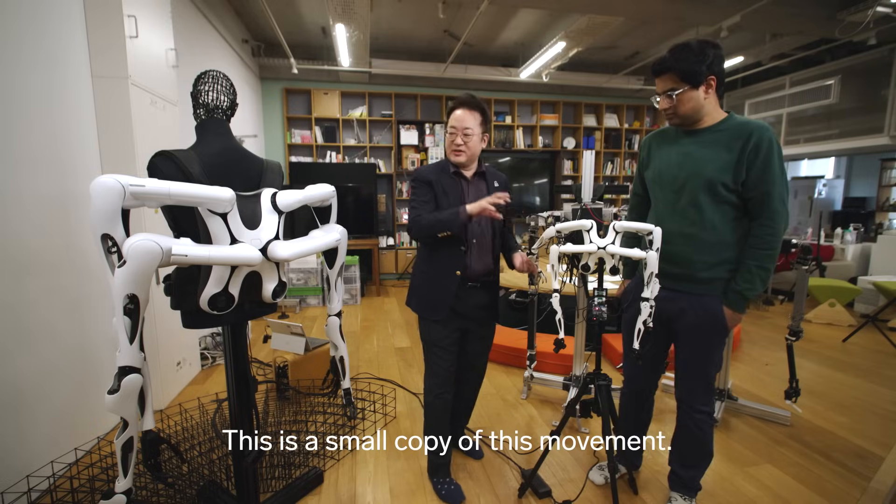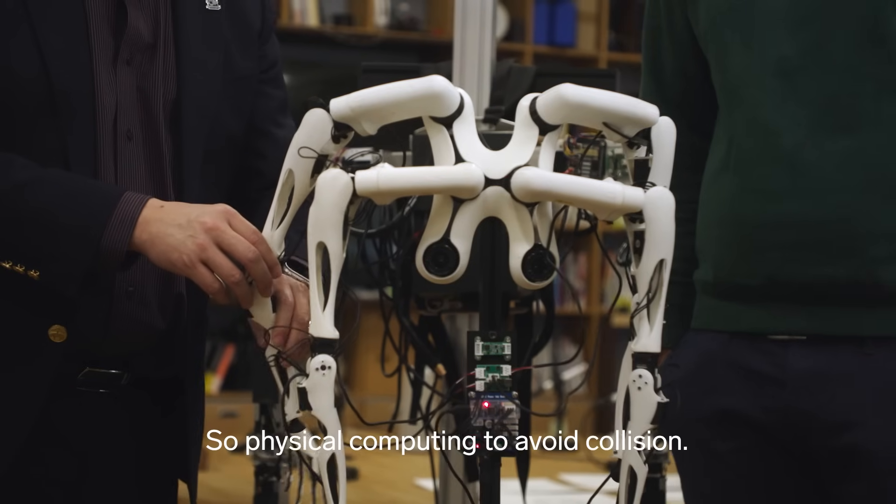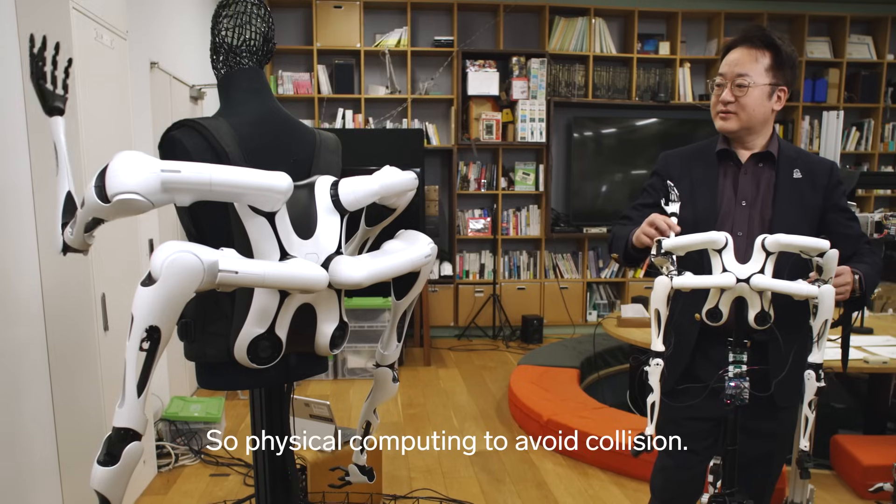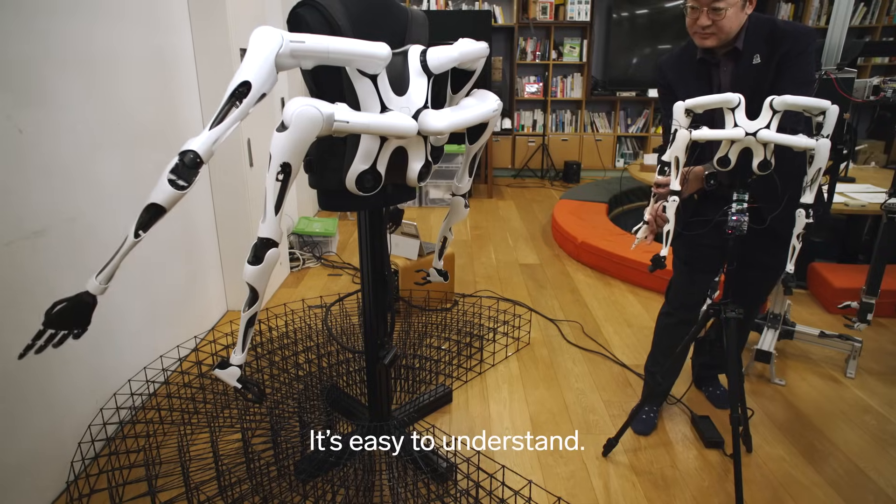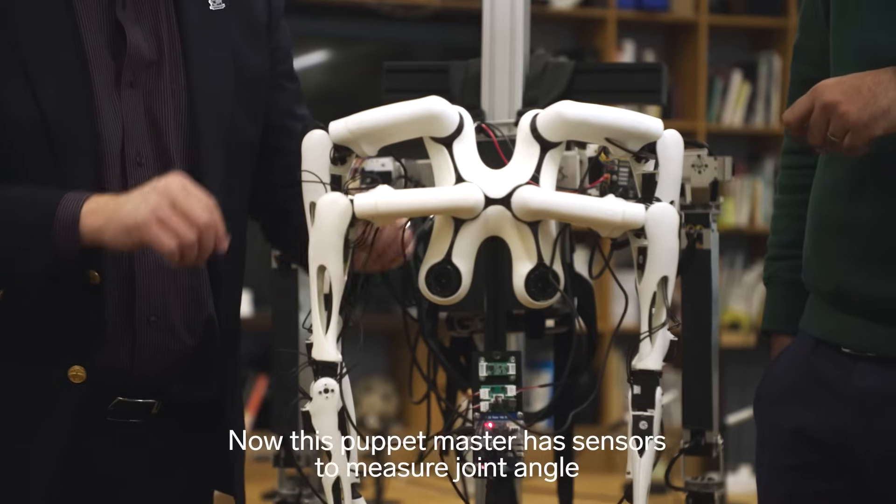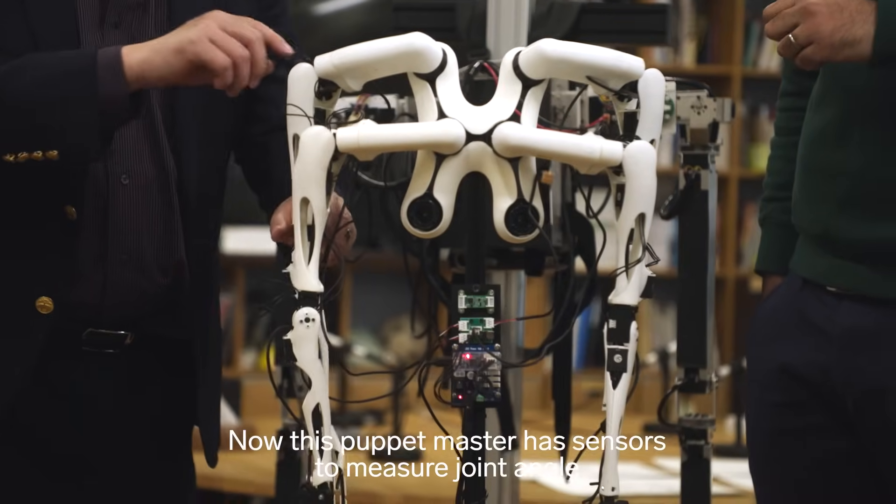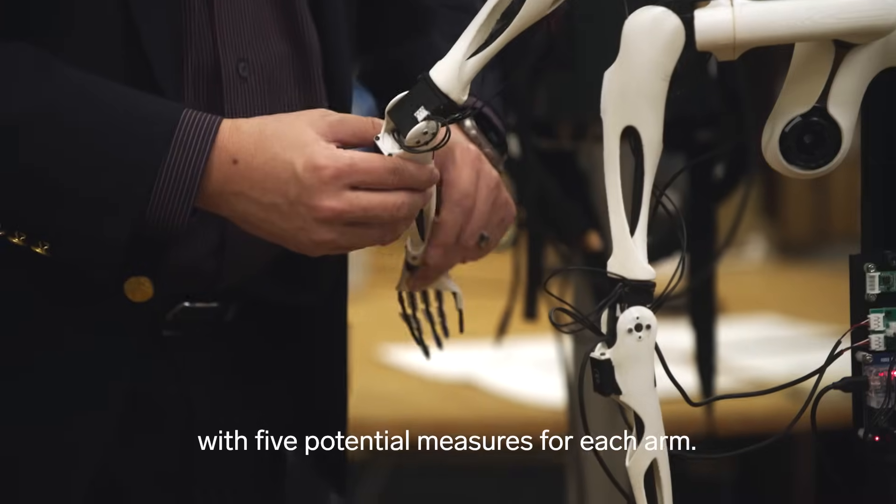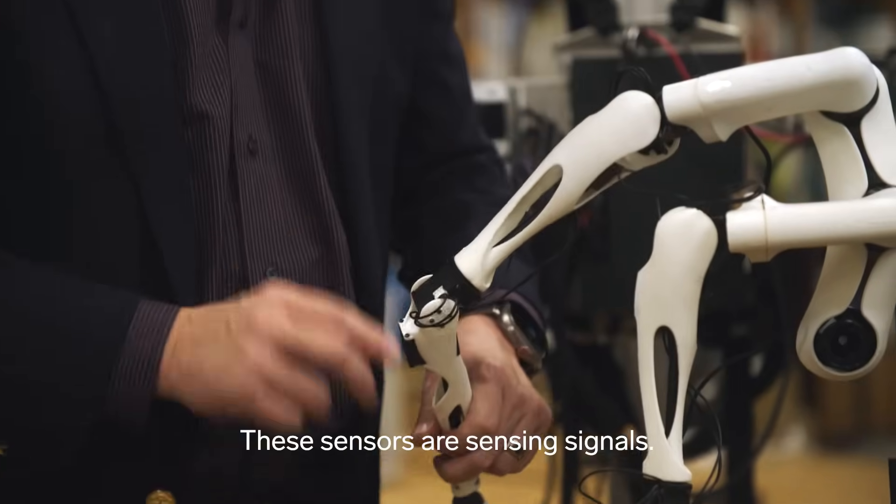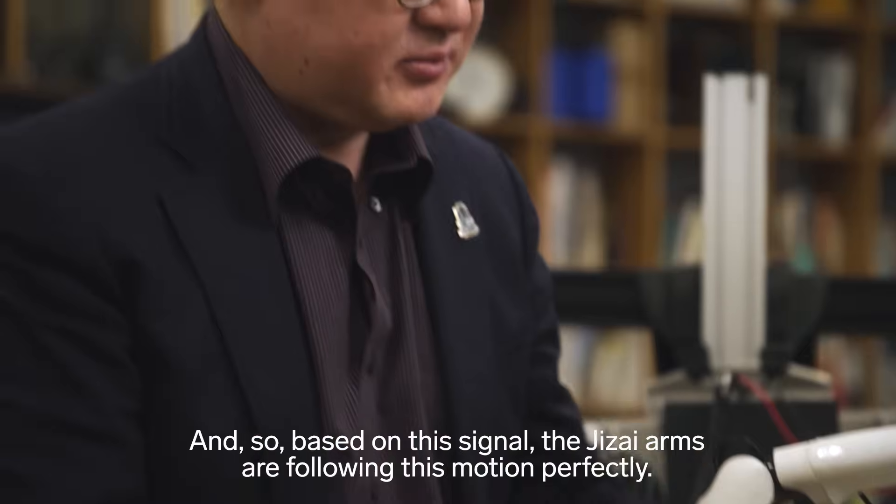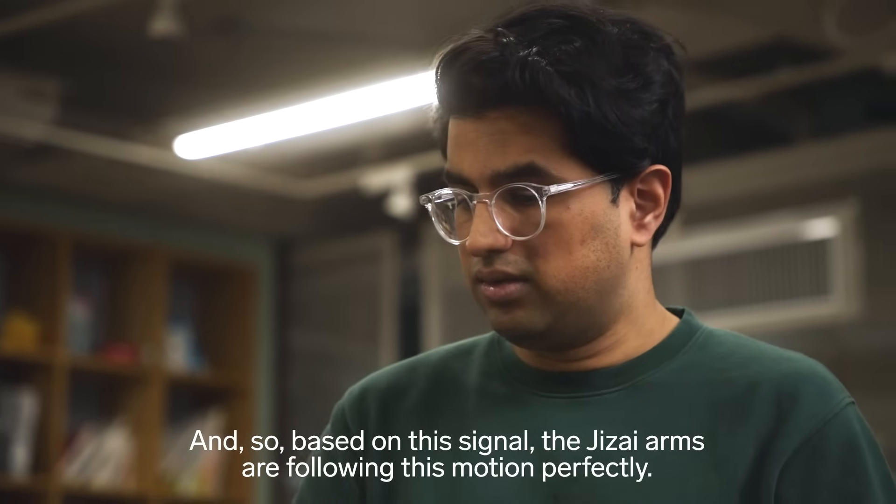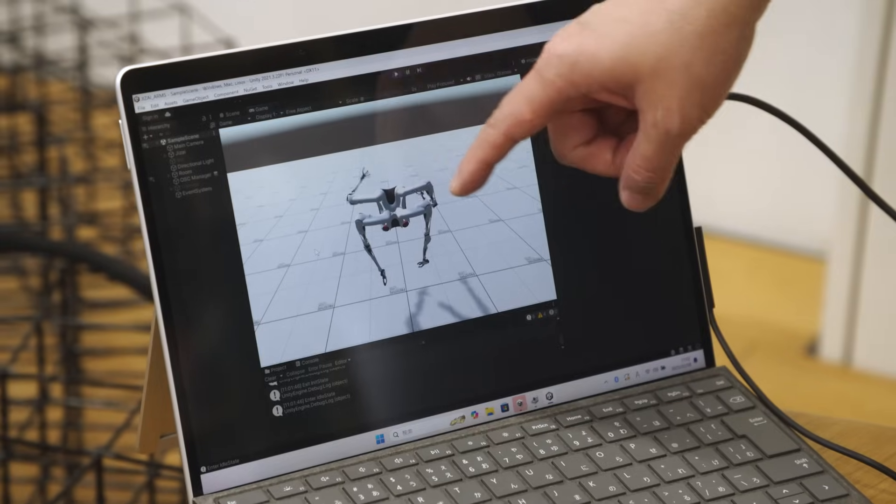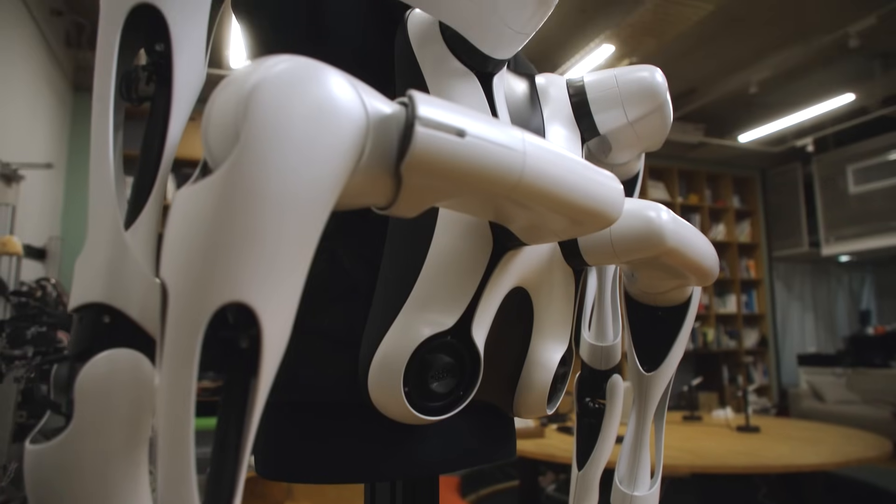This is a small copy of this movement. The physical computing to avoid the collision. It's very intuitive, easy to understand. This Puppet Master has sensors to measure joint angle of five potentiometers for each arm. This sensor is sensing signal, and based on this signal, the arms are following this motion perfectly. The sensors' data goes into the 3D model in the laptop, and then that controls the bigger arm.